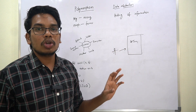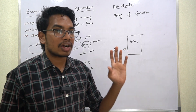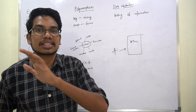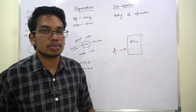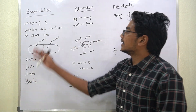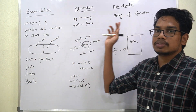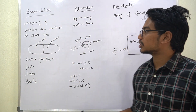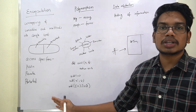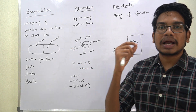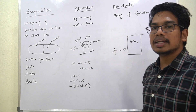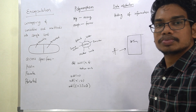This is the hiding of information — only the functionality is exposed, not the implementation. This is also one of the pillars: Encapsulation and Data Abstraction. This is the theory, and we will explain it in practical detail.